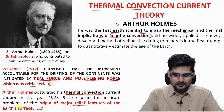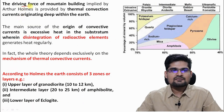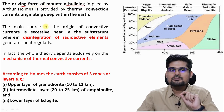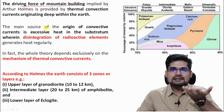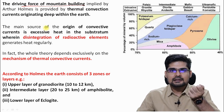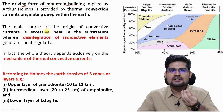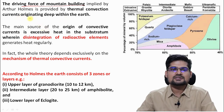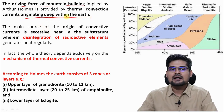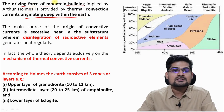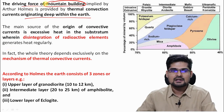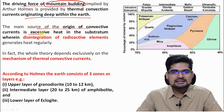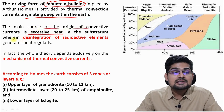Arthur Holmes talked about the driving force of mountain building. The earth's interior gives this driving impetus. He said that thermal convection currents originating deep within the earth are the driving forces for the surface mountain building that we observe. The main source of the origin of convective currents is excessive heat in the substratum.